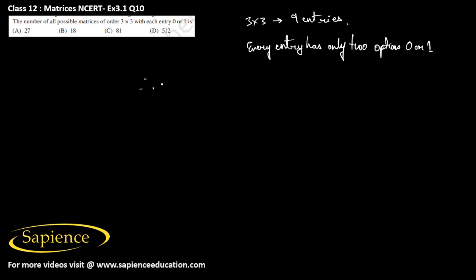Therefore, the number of all possible matrices will be 2 power 9. 2 power 9 will be 2 power 3 into 2 power 3 into 2 power 3, so you can write 2 power 3 whole cube.